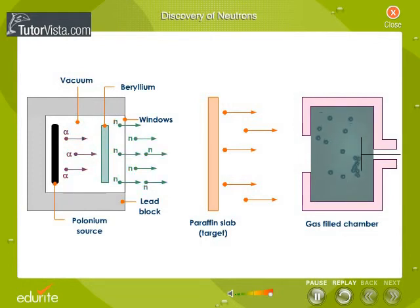The beryllium foil emitted the mysterious neutral rays. Chadwick placed a target in the path of these rays. These rays knocked out atoms from the target.